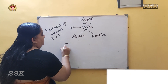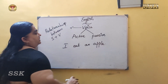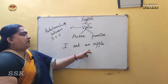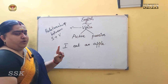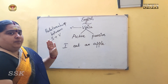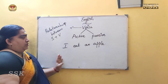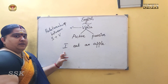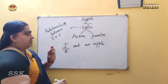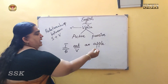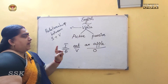For example, let's explain with a simple sentence: 'I eat an apple.' Using the sentence pattern — subject, verb, object, complement, adjunct — as we covered in our earlier classes: 'I' is the subject, 'eat' is the verb, 'an apple' is the object. So: subject, verb, object — active voice.